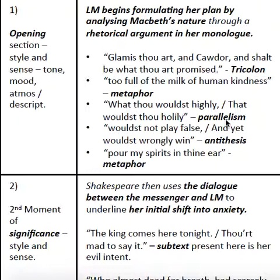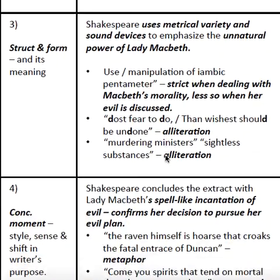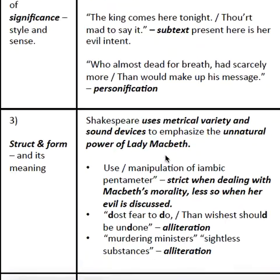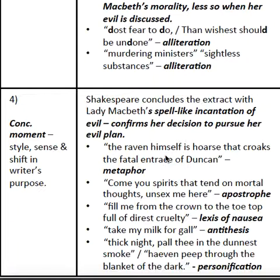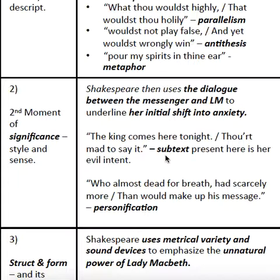And then finally that metaphor of pouring her spirits in his ear suggests that she has come to some sort of evil resolution. Once you've got an introductory section along these lines, you're looking for the second moment of significance — often a climactic moment in a text in this second paragraph. However, the structure of this particular extract doesn't exactly suit this, because the concluding moment of the extract is significantly more climactic, where she creates this sort of spell-like incantation. So your second body paragraph should be the second distinctive narrative moment, which usually will be a climactic moment in the centre of the text, but here, not so much.